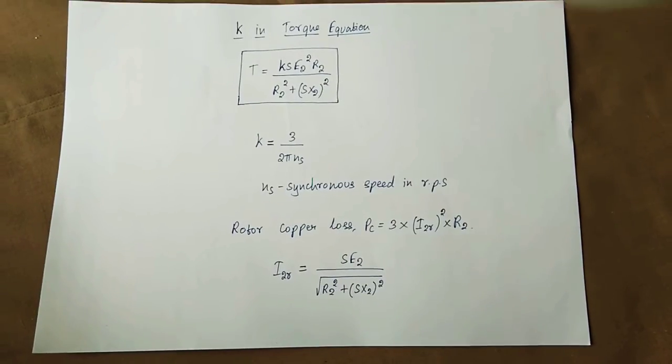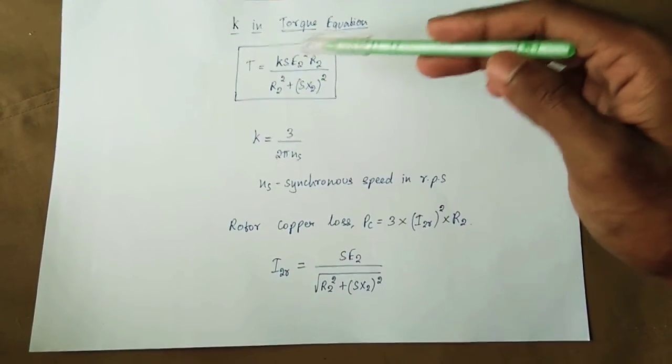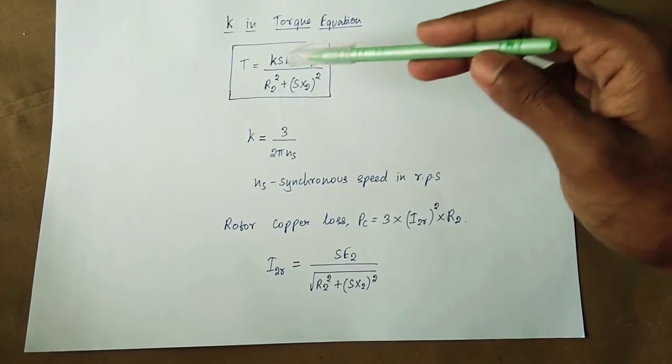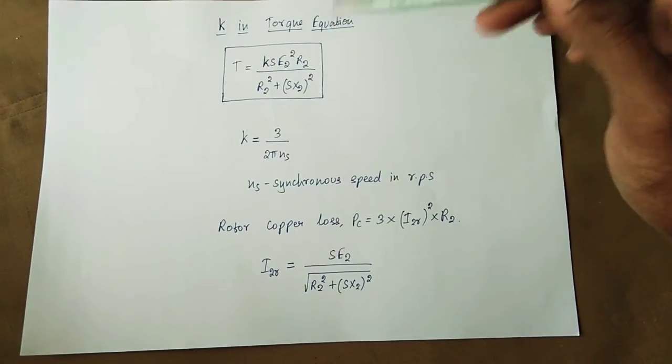The torque equation is: T = k × s × E₂² × R₂ divided by (R₂² + sX)², to the whole square.